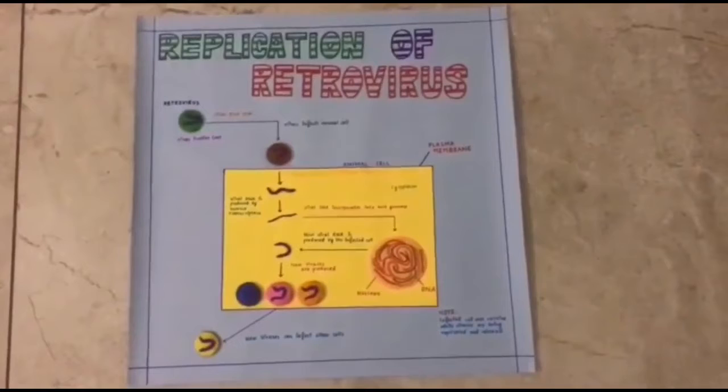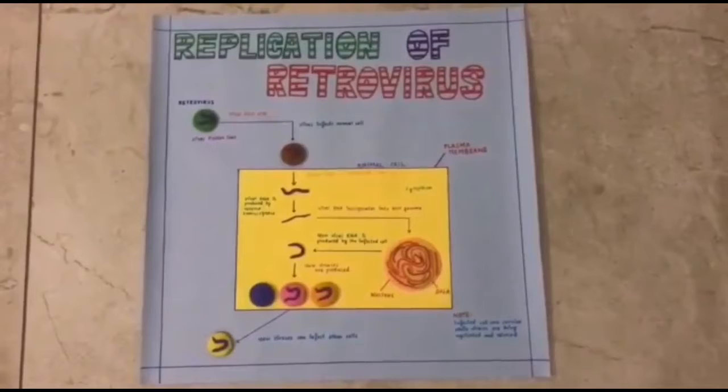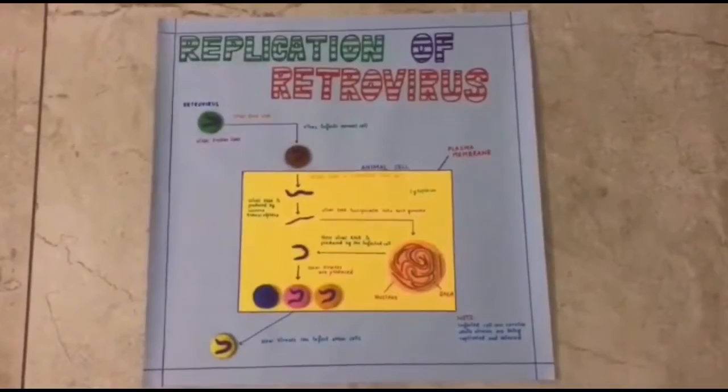So this is how I made the chart for replication of retrovirus. And the materials I used are chart paper, color paper, sketch pens, clay, rubber bands, and cardboard. So let's see how everything was made.